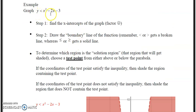It says graph y is less than or equal to x squared minus 2x minus 3. Step one, find the x-intercepts, factor. A little smiley face, you know we need to factor here. Draw the boundary line. And remember, if it's less than or greater than, it's broken or dashed. And remember, if it's less than or equal to or greater than or equal to, that gets a solid line.